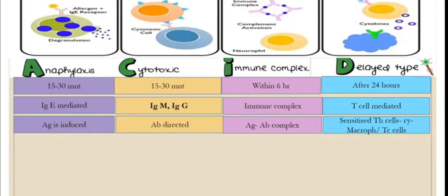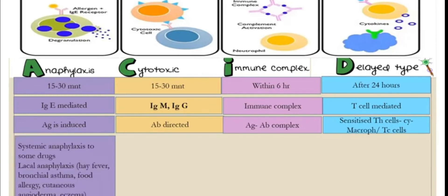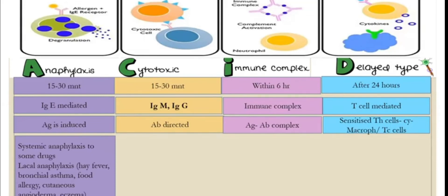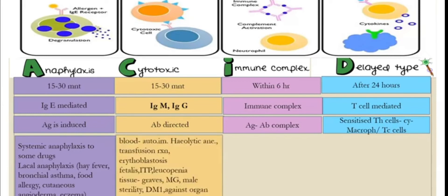For examples: Type 1 anaphylaxis may be systemic or local. Systemic anaphylaxis involves the whole body due to a drug, ingestion, or similar cause. Local anaphylaxis affects a local organ or system. Examples include hay fever, food allergens, cutaneous angioedema, and eczema.